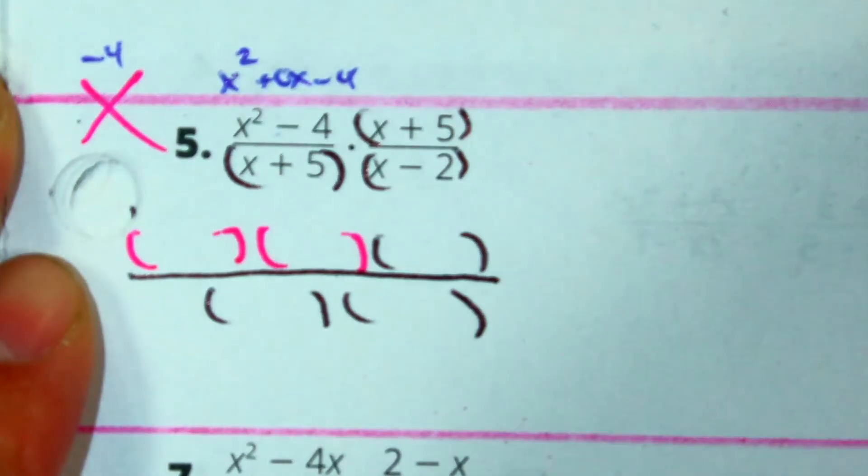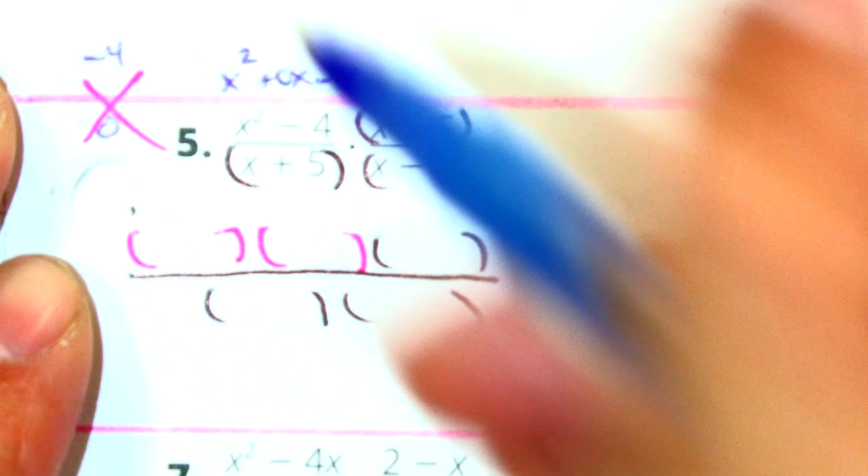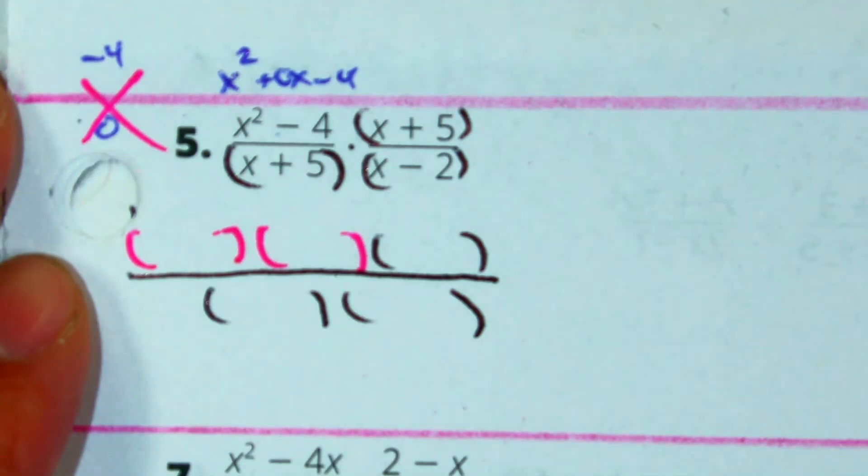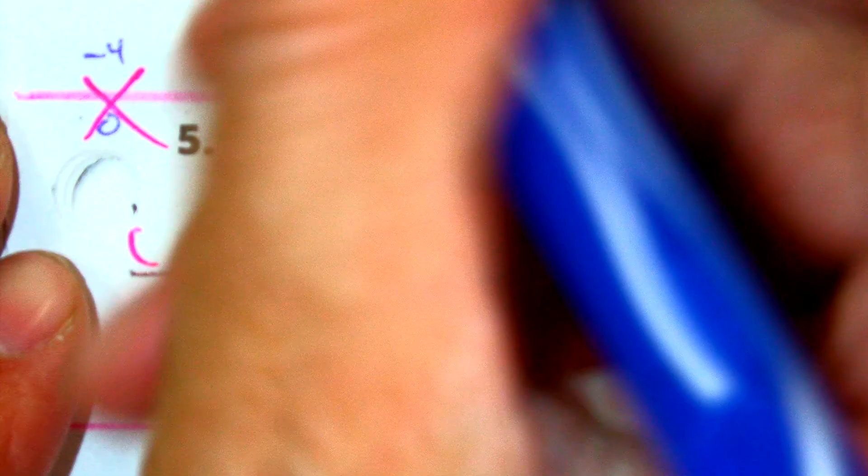A times C? B value? Good. Two numbers: 2 and negative 2.